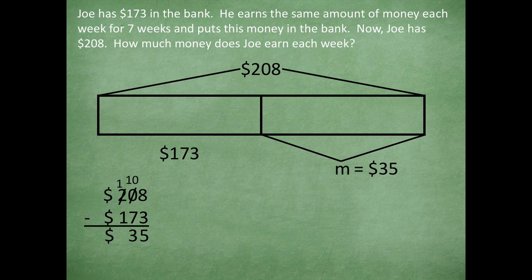So the money when he worked or had earned to be able to put into the bank, that was $35 over the seven weeks. Now notice how it said he made the same amount of money each week for seven weeks. This total over here of $35, he made that over seven weeks, but he made the same amount each week. That tells me that I have to do another step to this problem because I need to know how much he earned each week.